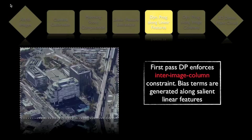Instead of following a rectified epipolar direction, our algorithm does not require prior rectification and performs the first-pass dynamic programming along extracted salient linear features, generating bias terms that encourage 3D points along the linear feature to have the same height.